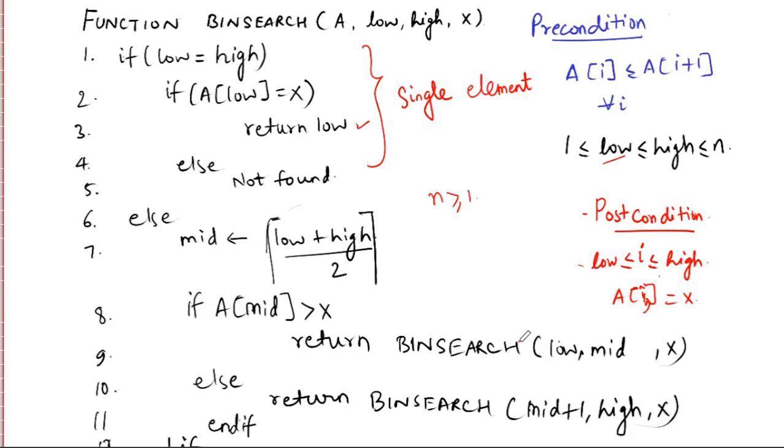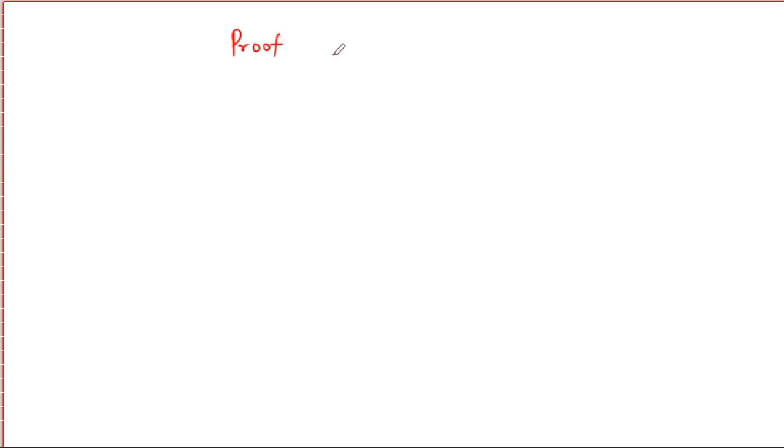For proving correctness, we are going to use the proof by induction method. This method has three stages: first is the assertion — what assertion you are making; second is the base step; and third is the inductive step, which means checking for all instances. If it holds for all instances, we can say the method will work for all cases. Otherwise, it will only work for a special case.